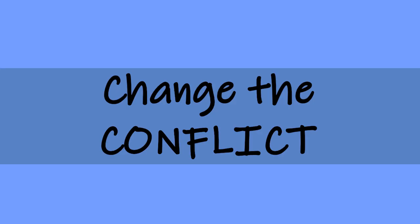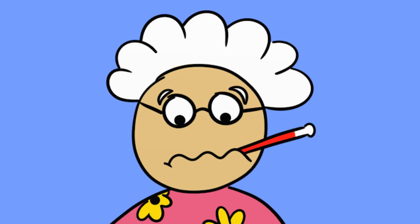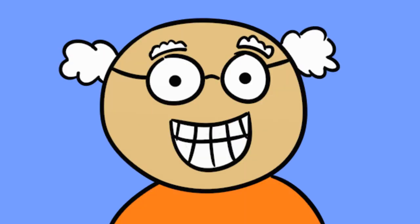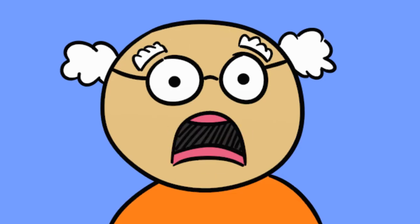Three, change the conflict. For a story to be interesting, it needs some sort of problem to solve — a conflict. Little Red Riding Hood's grandma was sick. But maybe Little Red Boxer Shorts' grandpa lost his false teeth.